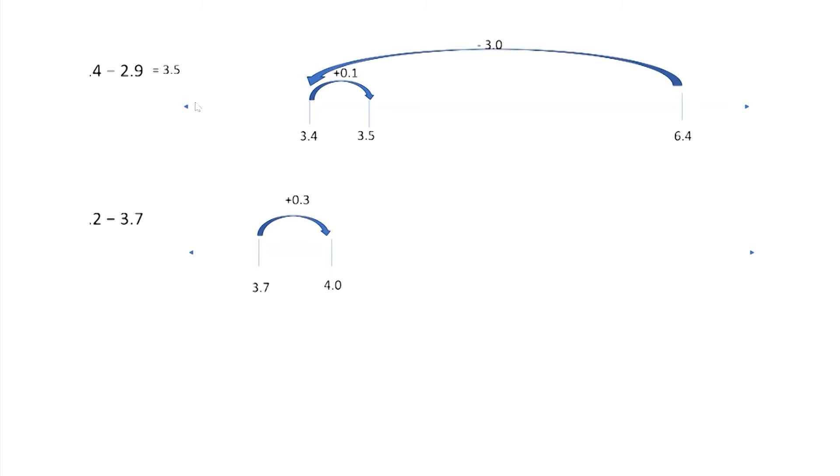I'm not to 7 and 2 tenths, but you can make a pretty big jump now. What would you do? 3? What is 4 plus 3? Good. See, now we're all the way to 7. And we'll only need to jump how much more to get to 7 and 2 tenths? 2 more tenths. Exactly.